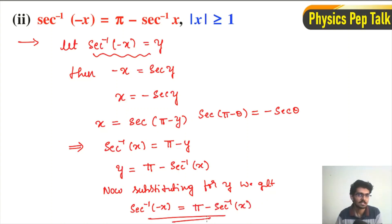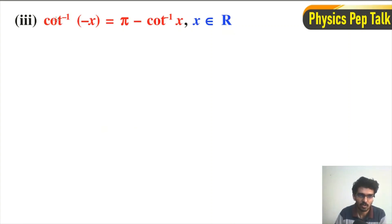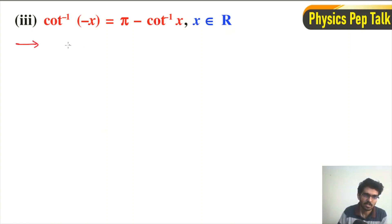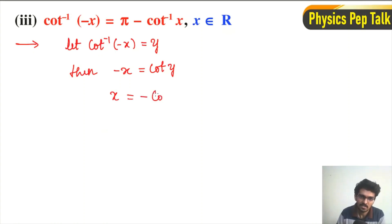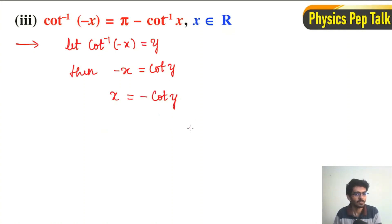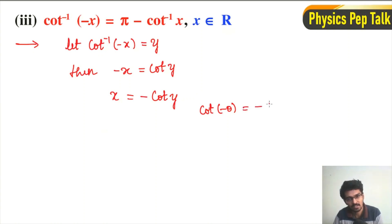Now the third property: cot⁻¹(-x) = π - cot⁻¹(x), for x belonging to the set of real numbers. We consider cot⁻¹(-x) = y, then -x = cot(y). Shifting the negative sign, x = -cot(y).